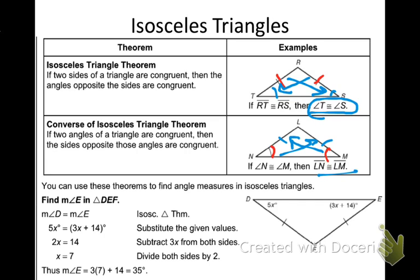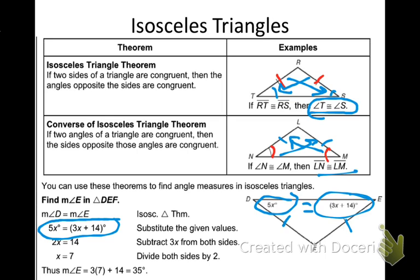Today we're going to solve a bunch of different problems involving isosceles triangles. I have an isosceles triangle and I'm given two angle measures. I can set them equal to each other because they are the angles opposite the congruent sides of the isosceles triangle. So I set them equal, solve for x, plug x back in, and I can find both angles.